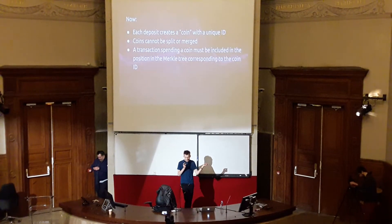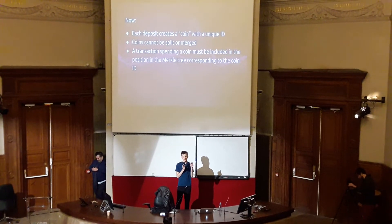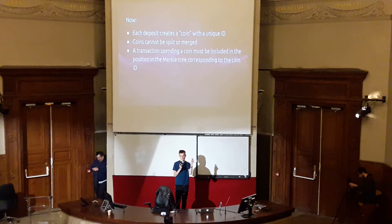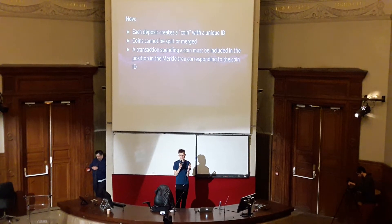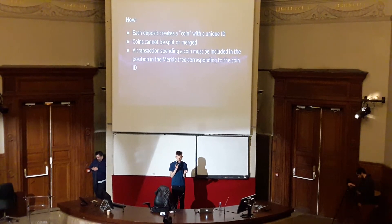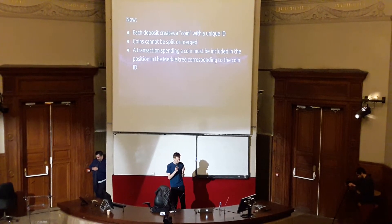Convert 23 into binary: 0, 1, 0, 1, 1, 1. And that describes the Merkle path that you have to walk down to find the transaction, in order for that transaction to be valid.